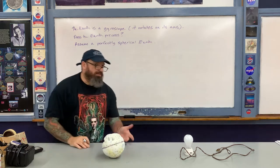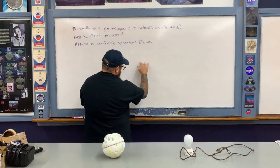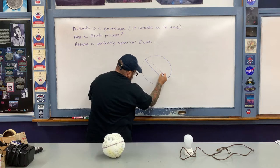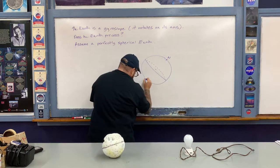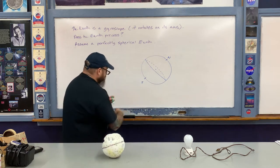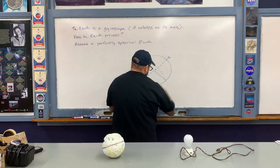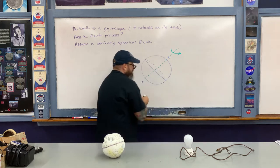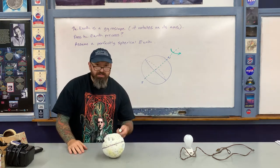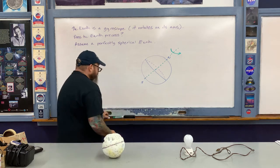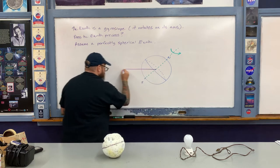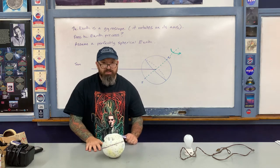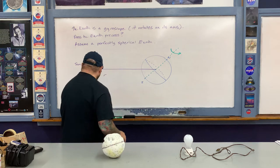Let's go ahead and draw the earth like so, large enough to work with. Here is the earth's equator, the center of the earth, the north pole, and the south pole. Here's the axis of rotation, and as the earth rotates from west to east, the earth's axis is tilted with respect to the ecliptic — the plane of the earth's orbit about the Sun. The Sun is off in this direction at some distance. The tilt on this diagram is 23 and a half degrees.